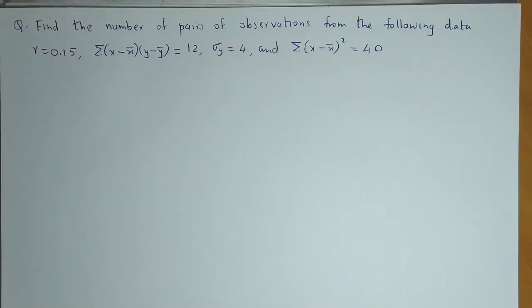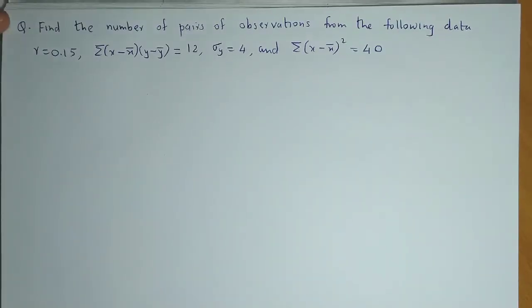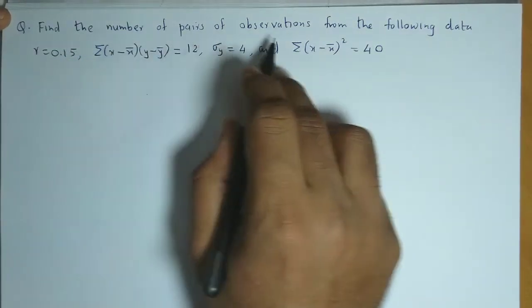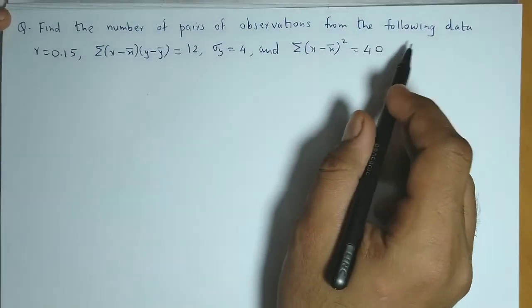Let us take one more example related to correlation. Find the number of pairs of observations from the following data.